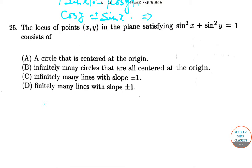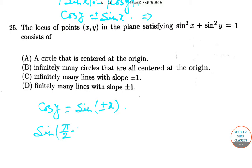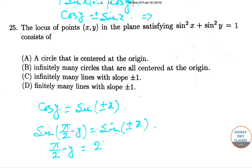So cos y = ±sin x. This means sin(π/2 - y) = sin(±x). Therefore π/2 - y = 2nπ ± x, where n is an integer.